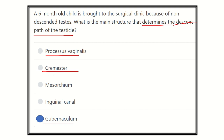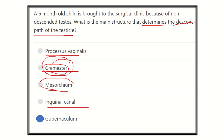The cremasteric muscle is responsible for contraction of the scrotum and maintains thermoregulation, but it is not responsible for the descent of the testis. The external oblique major is also not responsible. The inguinal canal is a pathway for the descent of the testis but has no role in causing the descent. So the answer today is gubernaculum. Thank you all, stay tuned with us.